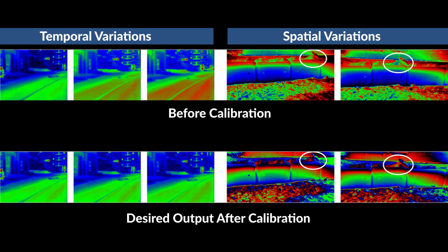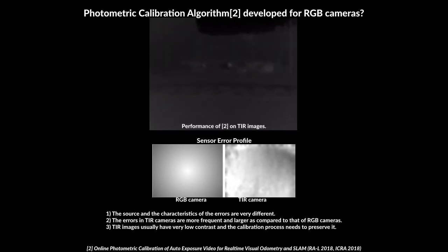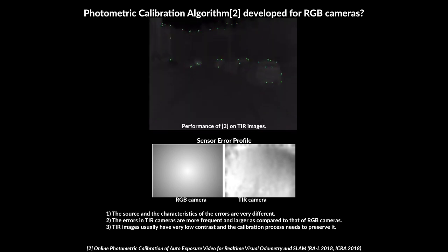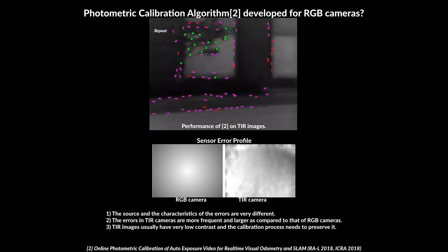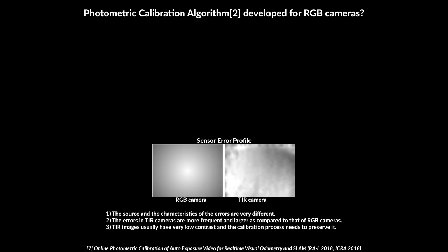There are two major types of these errors. You may pause the video to take a closer look and refer to our paper for details. Algorithms to fix such errors for normal RGB cameras exist, but we cannot use them for thermal cameras. RGB and thermal cameras work very differently and have different error profiles. Thus, we need specific algorithms.